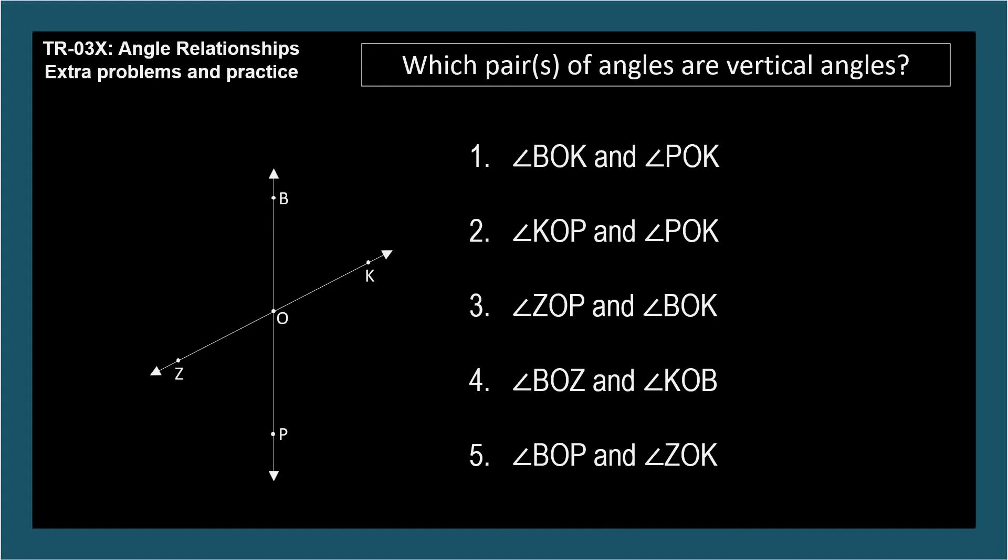Which pairs of angles are vertical angles? Angle Z-O-P and angle B-O-K are vertical angles since they're on opposite sides of the intersection. Angle Z-O-B and P-O-K would be the other pair of vertical angles.